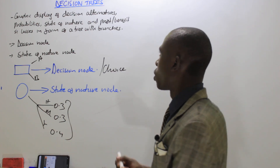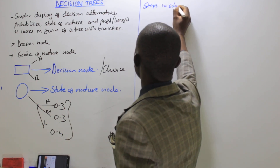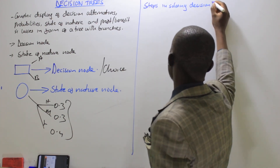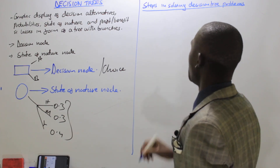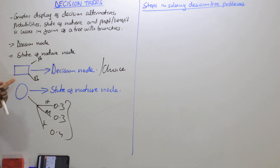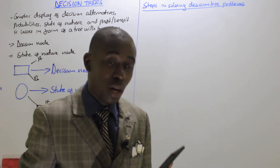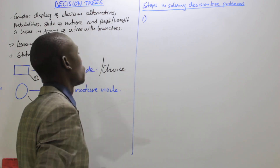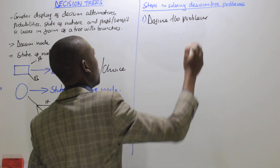This is the main concept. We'll also be talking of the steps in solving decision tree problems. These steps are very important for you to understand. So long as you've grasped these two key elements — the nodes — working through the steps will be very easy. Step number one: you have to define the problem.